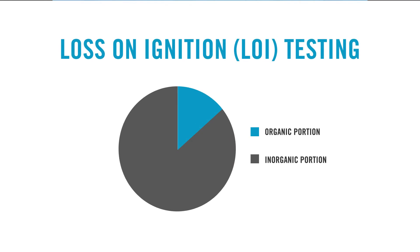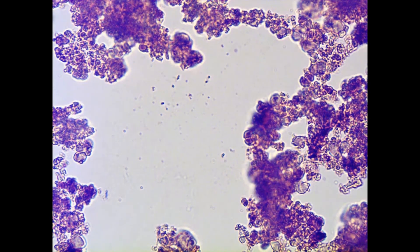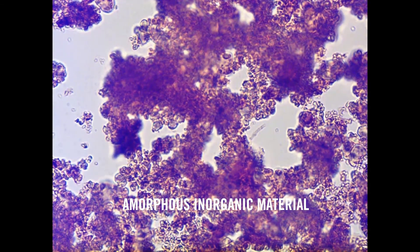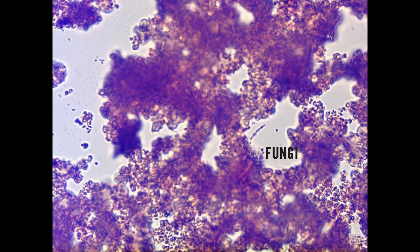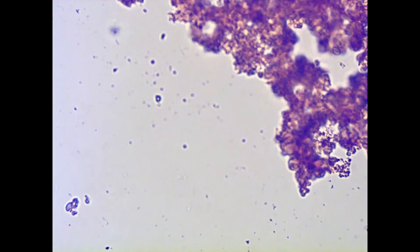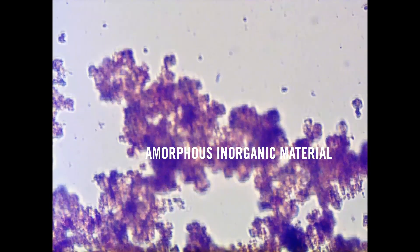When we ran our loss on ignition testing, we found that 72.7% of the foulant was inorganic in content. That means that the bulk of the foulant is inorganic. The client thought that they had a biological fouling issue, and that's what they geared their maintenance procedures towards. So now let's take a look under the microscope and see what biological material we can find. During the analysis we saw mainly particles, which we associate with inorganics, and also amorphous inorganic material, which just means that it doesn't have a crystalline structure. For our organics, we found fungi. But the bulk of the analysis mostly revealed inorganics, which we expected from our loss on ignition testing.